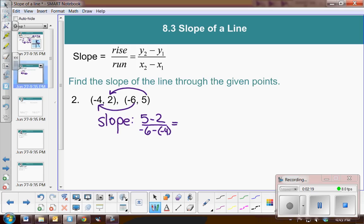Now just be careful with your integers. 5 minus 2 is 3. We're going to add the opposite. So it'll be over negative 2.